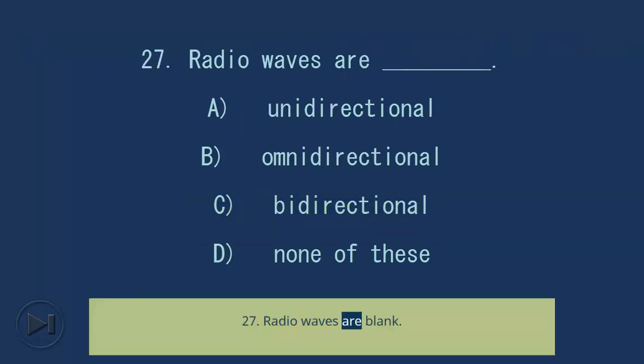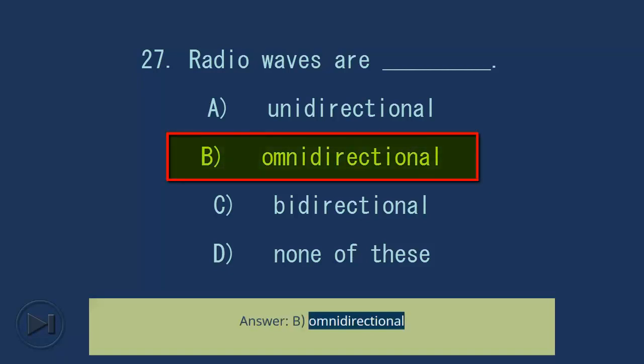Question 27: Radio waves are blank. A) unidirectional, B) omnidirectional, C) bidirectional, D) none of these. Answer: B, omnidirectional.